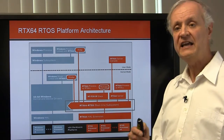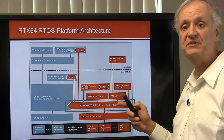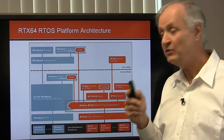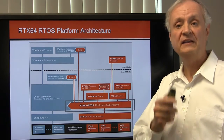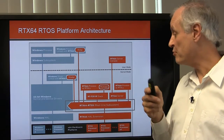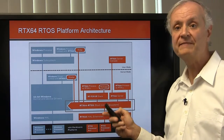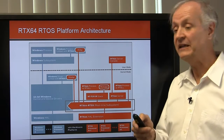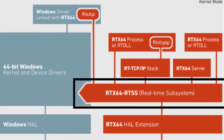Finally, let's take a look at the real-time subsystem in detail. The RTX scheduler is both priority-based and preemptive, meaning the highest priority thread will always run. No Windows thread can ever preempt an RTX thread, and the highest RTX priority thread will always run on its allocated cores.